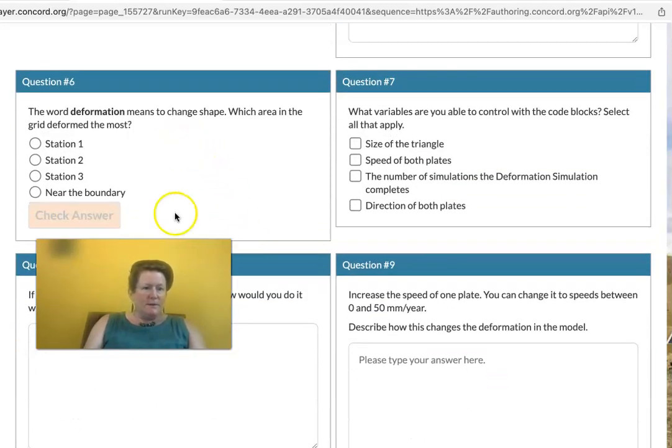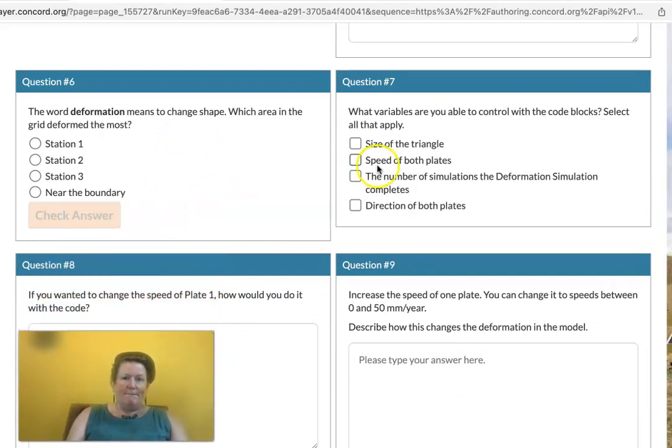The word deformation means to change shape. Which area in the grid is deformed most? I'll let you do that one. What variables are you able to control with the code blocks? Select all that apply. Size of the triangle. Speed of both plates. The number of simulations the deformation simulations completes. Direction of both plates.